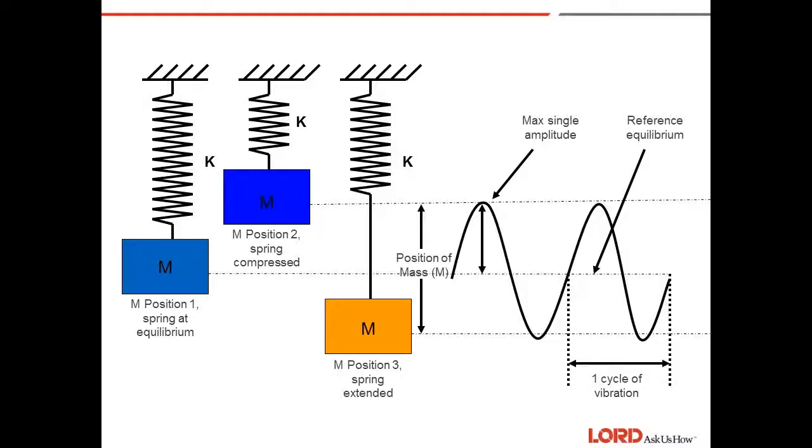If a force or deflection is applied to the system and then removed, the spring mass will vibrate. When plotted against time, the position of the mass relative to its position of equilibrium is a sinusoidal curve. The maximum single amplitude is deflection of the mass from its position of equilibrium to its maximum displacement in one direction. The double amplitude displacement is the total deflection in both directions. The period or amount of time to complete one cycle is the time it takes for the mass to move from its equilibrium position to its peak in one direction, its peak in the other direction, and back to its equilibrium position.